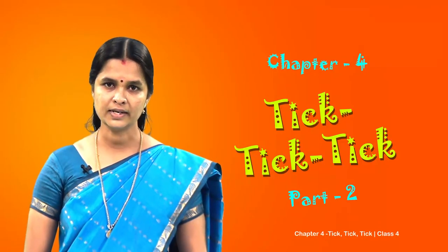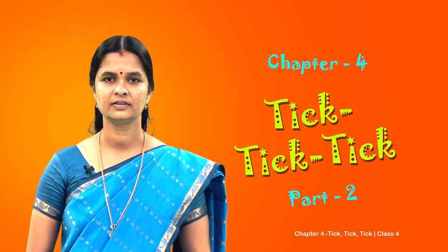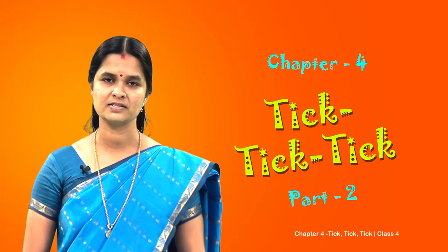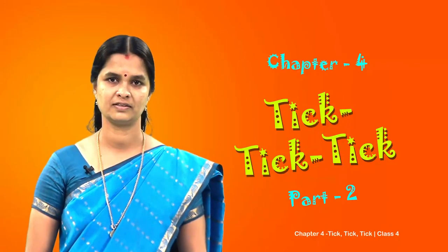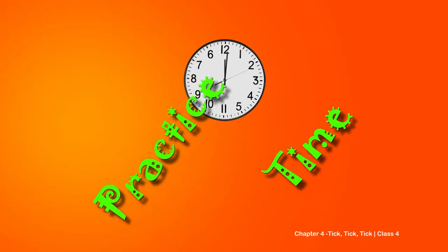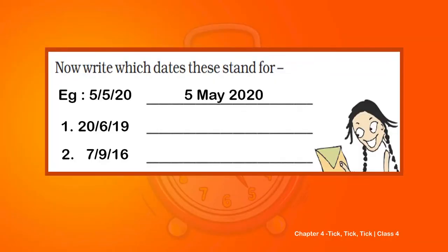Now let us try to write some more dates in different ways. Write which dates these stand for. In the first question, which is the sixth month? Correct - it is June. So it can be written as 20 June 2019.